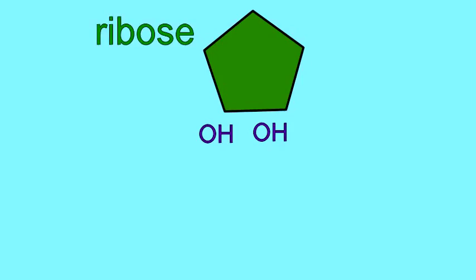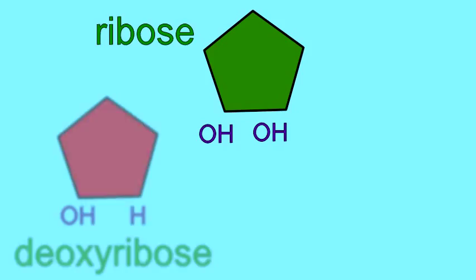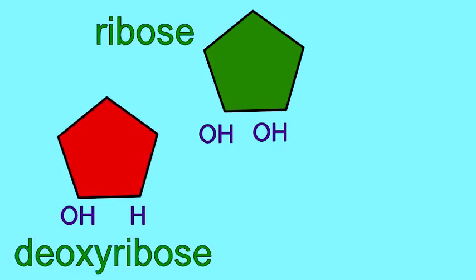The sugar ribose possesses OH groups on its two-prime carbon and three-prime carbon. The sugar deoxyribose possesses an OH group on its three-prime carbon only.